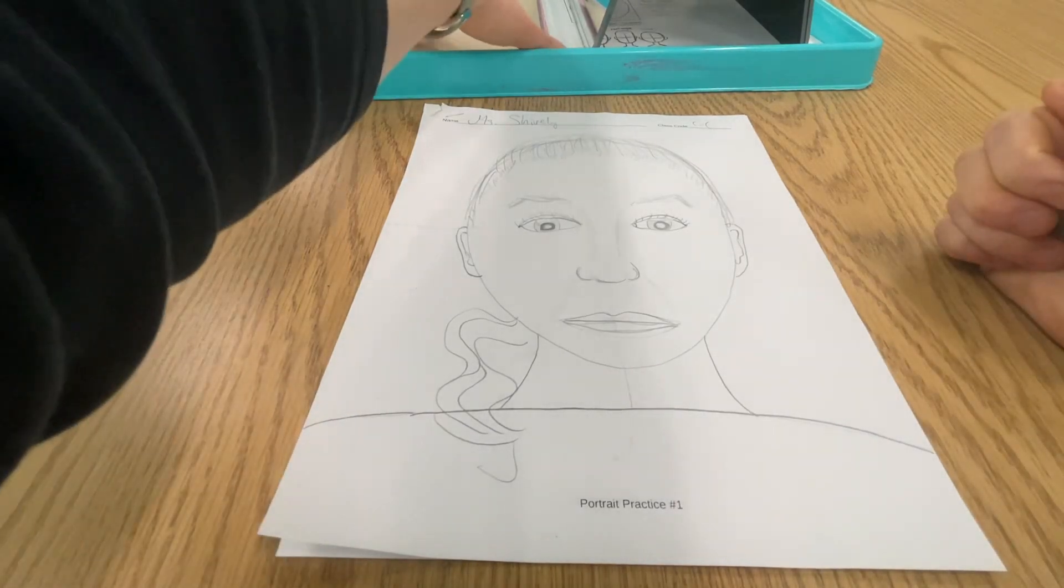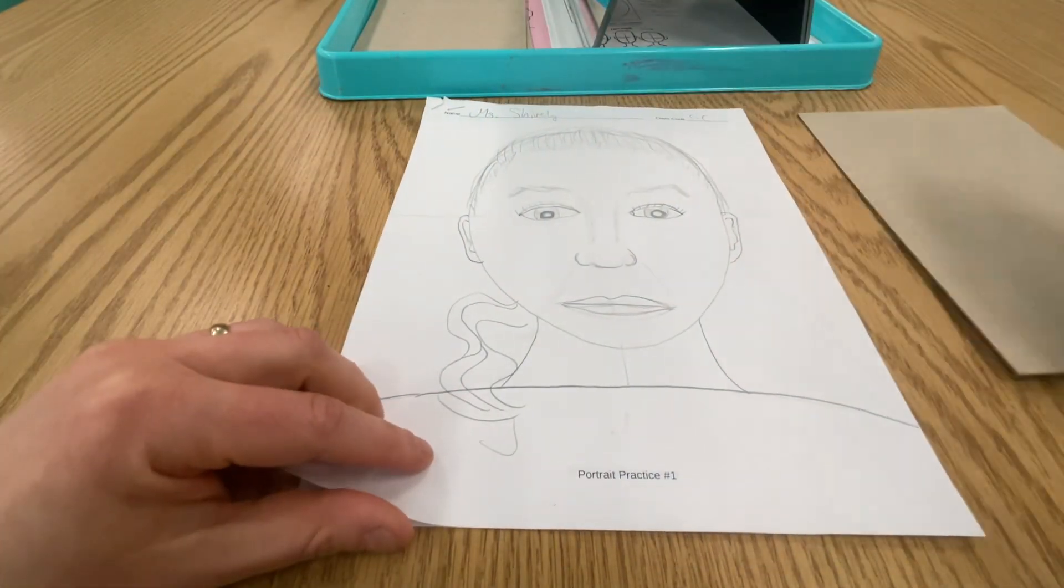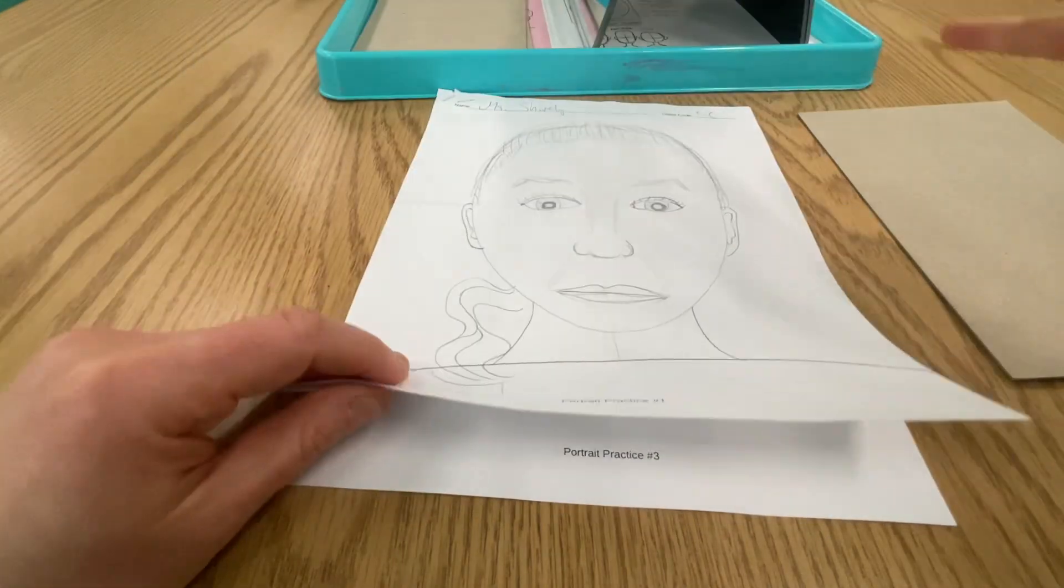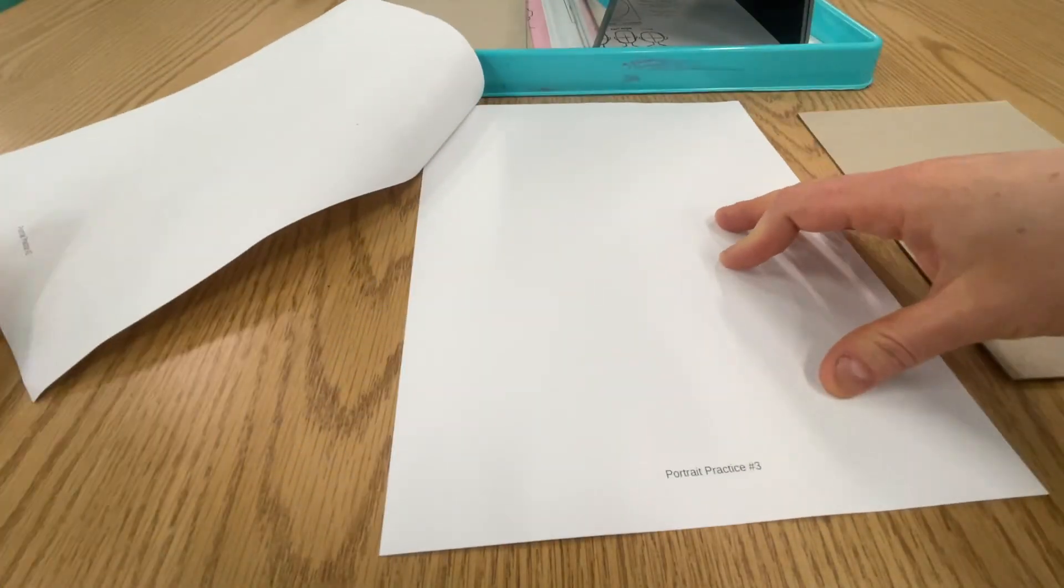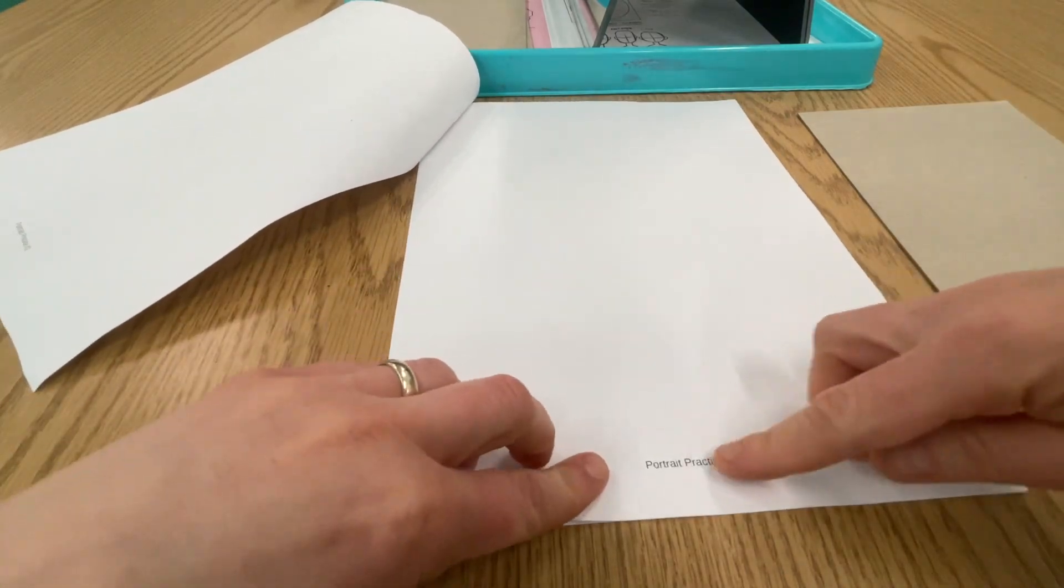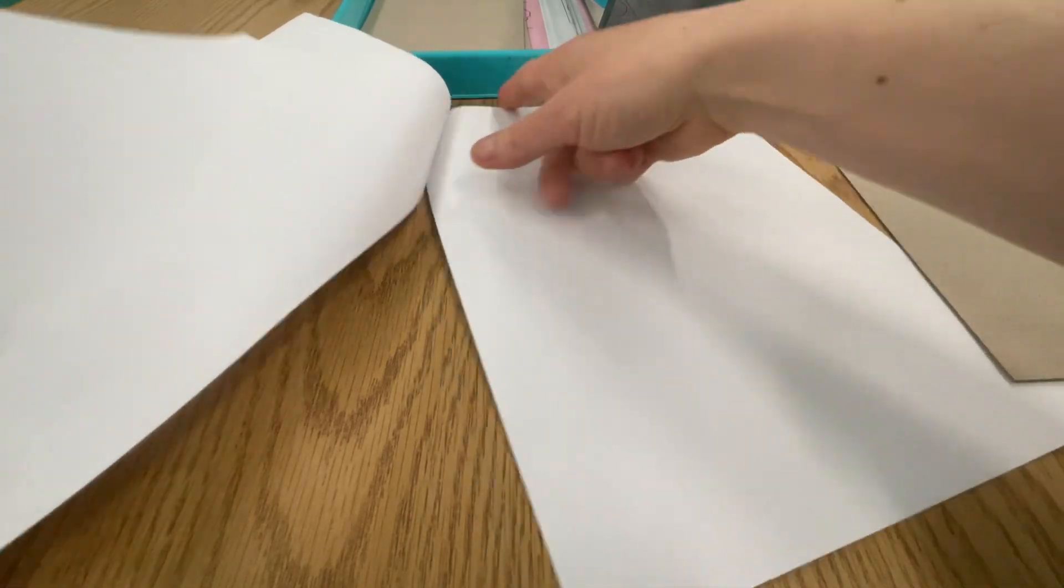All right artists, your first job is to trace this rectangle stencil inside of your self portrait practice packet. So regardless of where you got to last time, maybe you only got one done, maybe you got two, maybe even got three done, whatever the case, find where it says portrait practice number three and turn the page. That's where you're going to be.